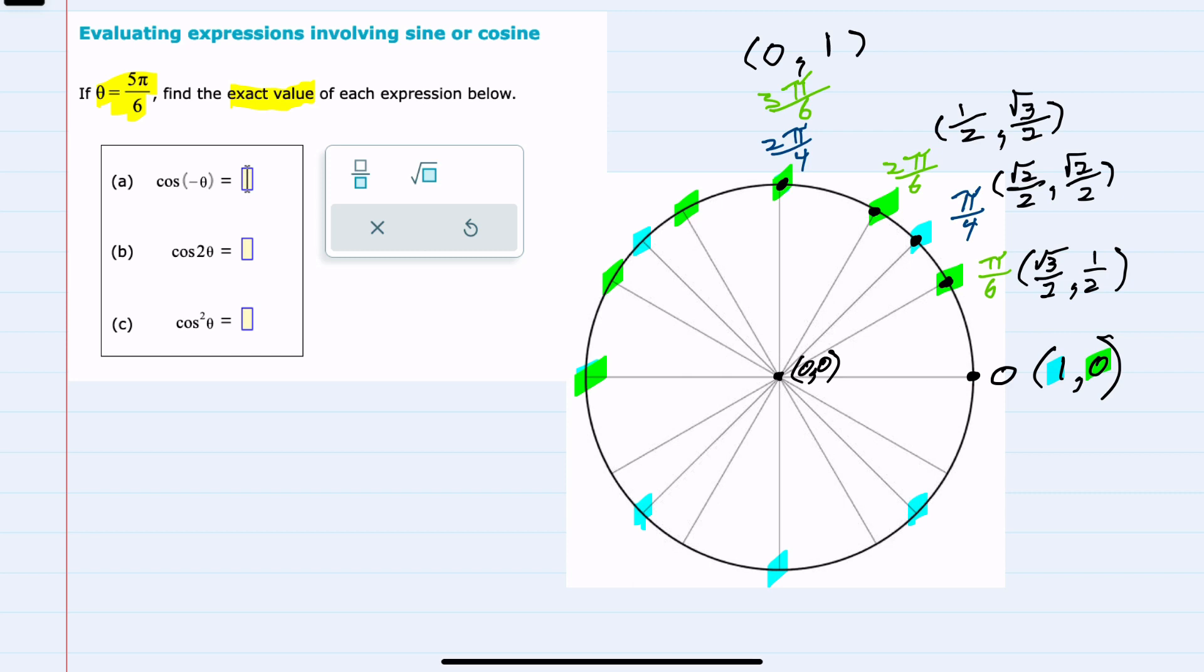And now that we have this sketched out, I'll start with a, which is the cosine of negative theta. So that will be the cosine of, since our theta is 5π/6, this would be negative 5π/6. And to get this exact value, since it's a negative, I'm going to be moving this way around the unit circle.